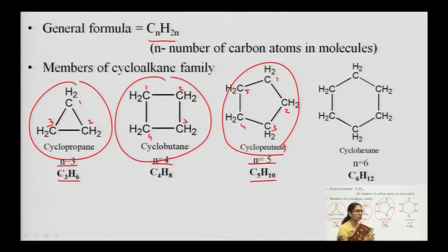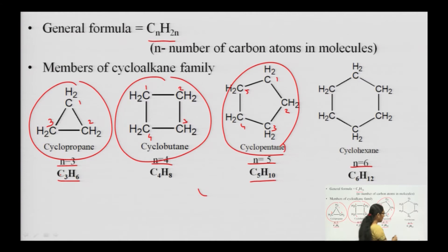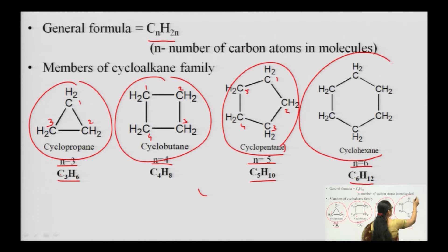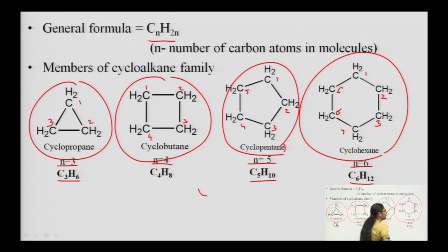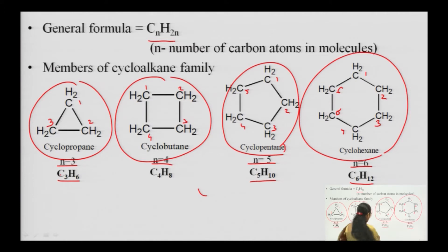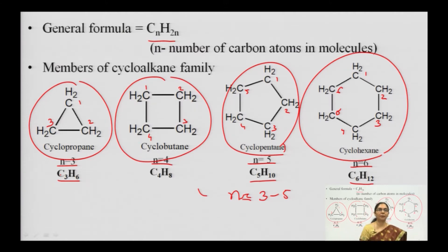If n = 6, the formula comes out to be C₆H₁₂, and the closed chain framework is cyclohexane — carbon 1, 2, 3, 4, 5, 6. All these compounds — cyclopropane, cyclobutane, cyclopentane, and cyclohexane — belong to the series of lower cycloalkanes. As you increase n, you can design the entire homologous series using the general formula CnH₂n.